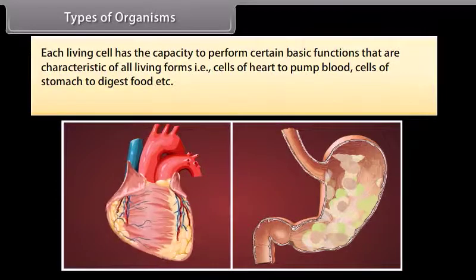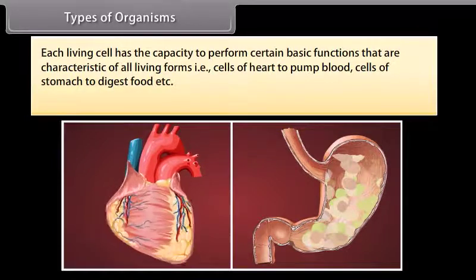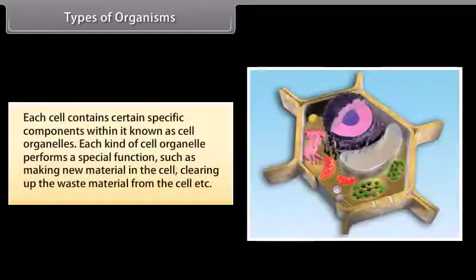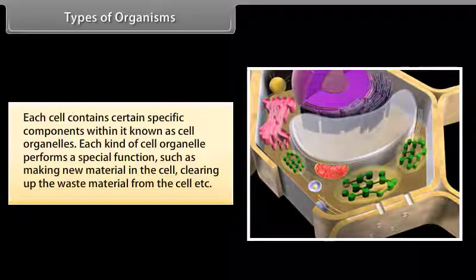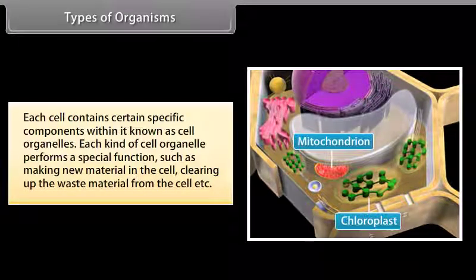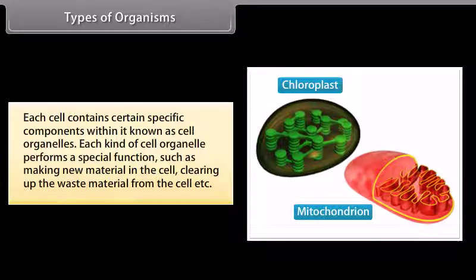Each living cell has the capacity to perform certain basic functions characteristic of all living forms, such as cells of the heart pumping blood and cells of the stomach digesting food. Each cell contains certain specific components known as cell organelles, and each kind of organelle performs a special function, such as making new material in the cell or clearing up waste material.